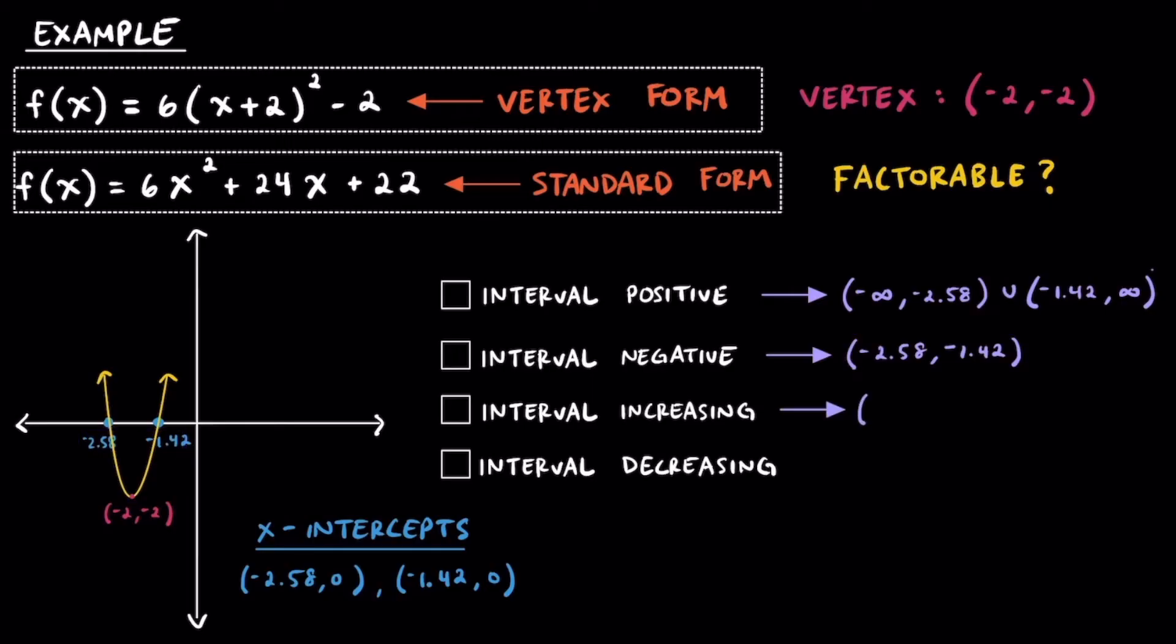For the interval in which this quadratic is increasing, that's going from -2 to positive infinity. Basically, that's just where the parabola is increasing, or going up to the right. Keep in mind that we use the vertex to help us find that value.